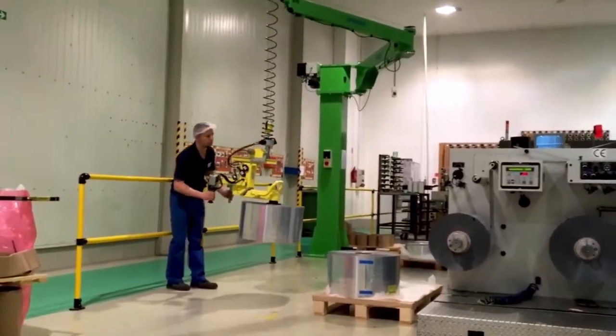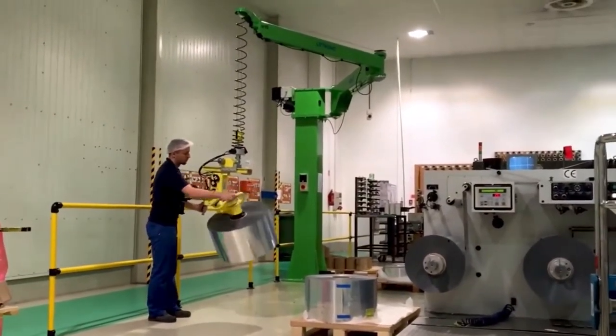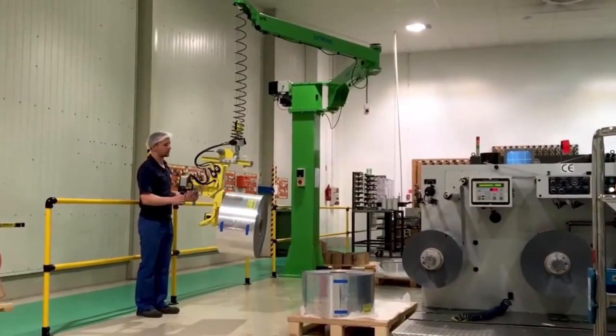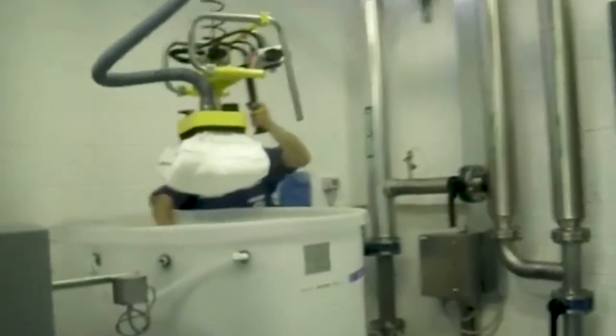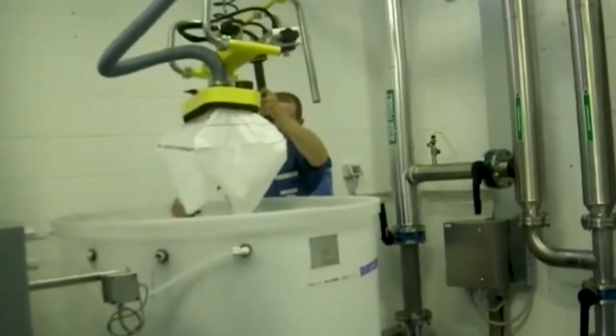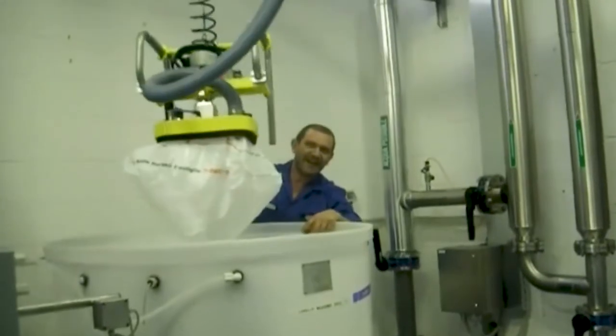The manipulator is auto-balancing. That is, it automatically adjusts in real-time the weight of the object to lift and does not require any adjustment or setting by the operator in case of changing weights, as it is required for a pneumatic manipulator.